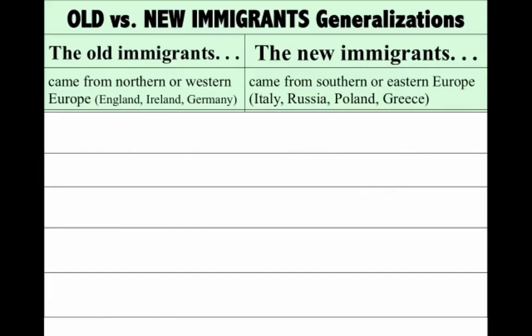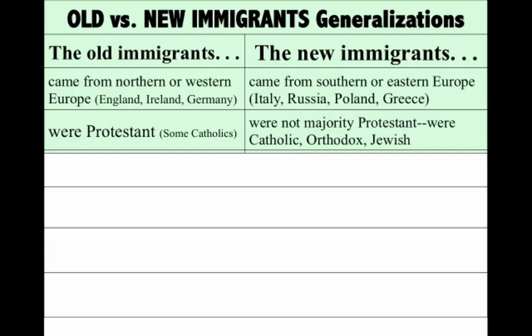A key component of this time period is not only urbanization but immigration. It's important to keep in mind that there is a different type of immigrant. The old immigrants were from largely northern and western European countries — England, Ireland, and Germany — through much of the early 19th century. These new immigrants are coming from southern and eastern Europe: places like Italy, Russia, Poland, and Greece.